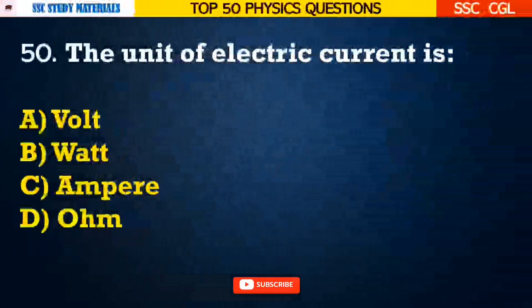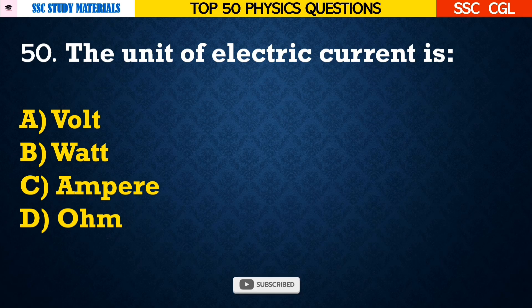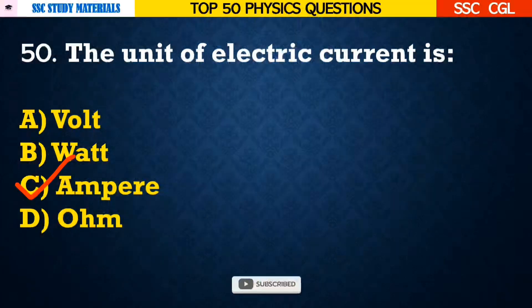Question number 50: The unit of electric current is — Answer C. The SI unit of electric current is ampere.